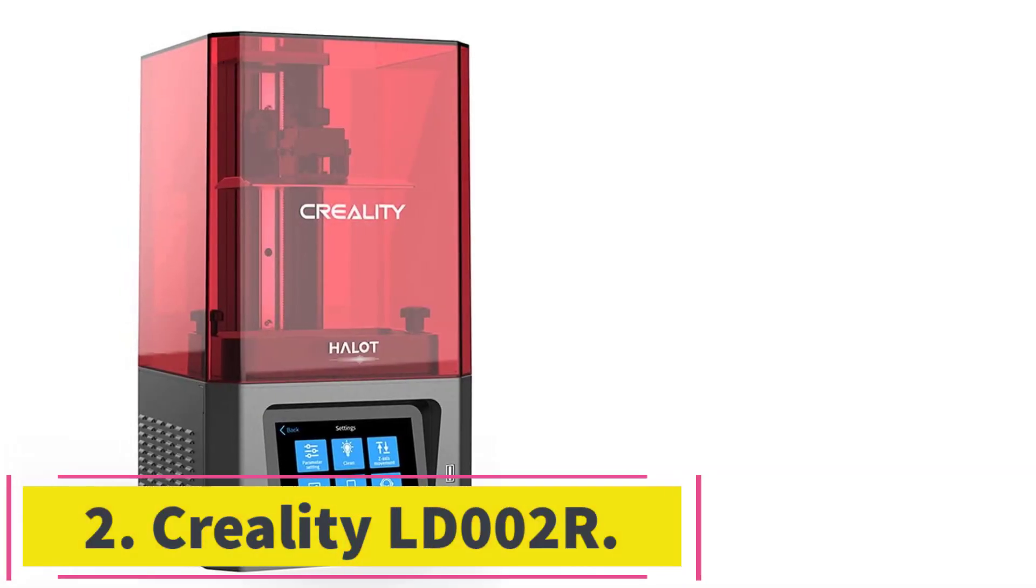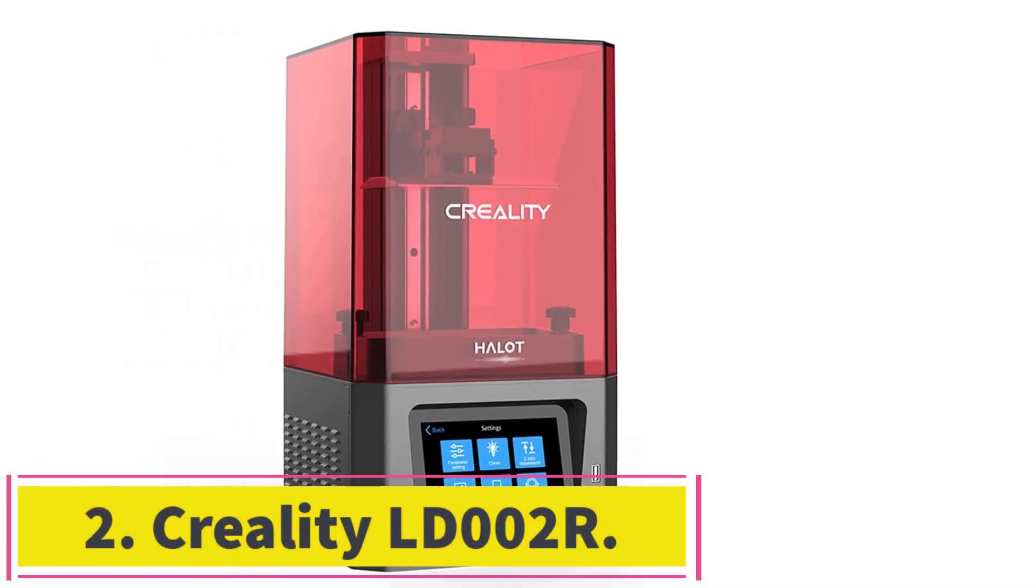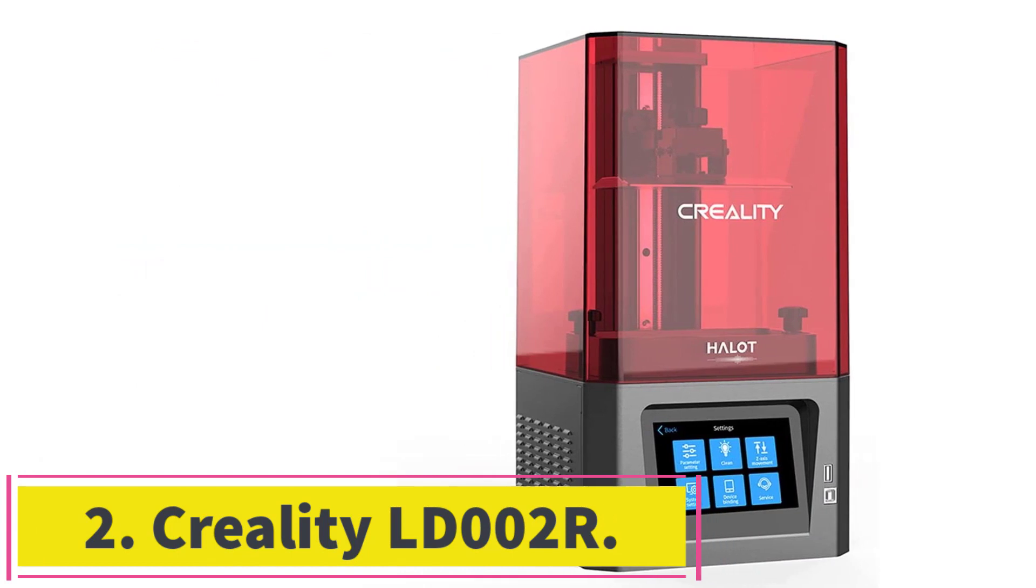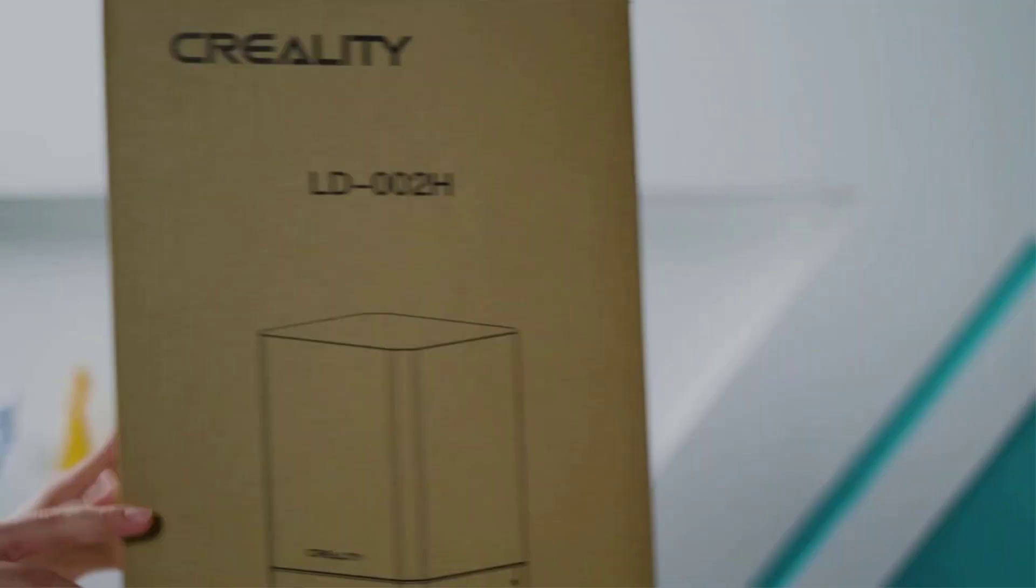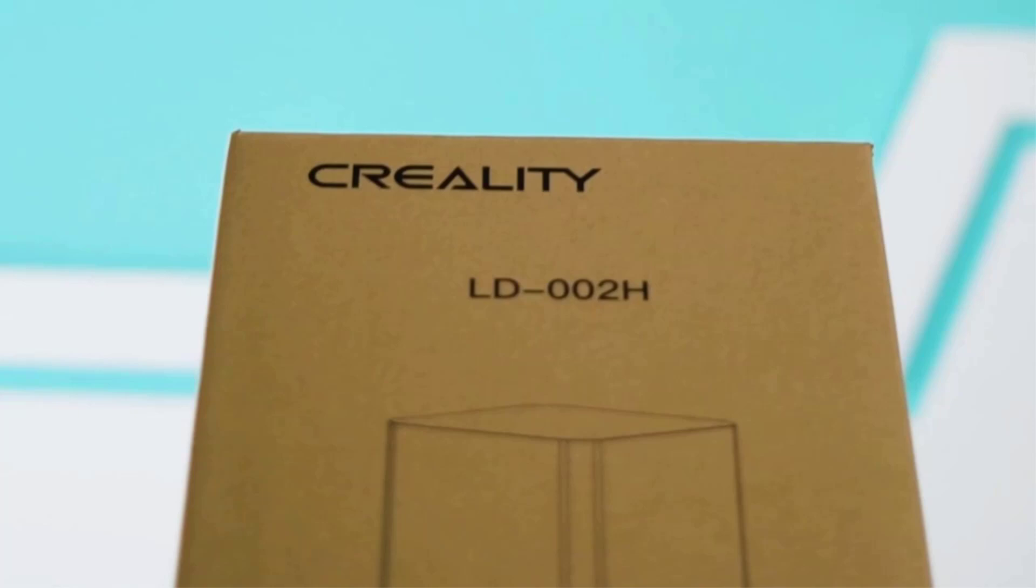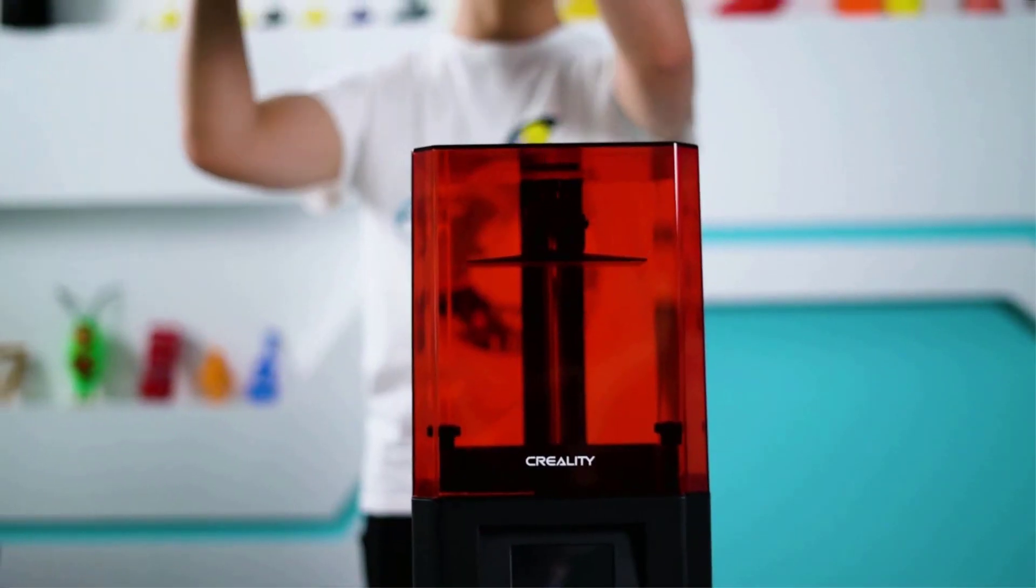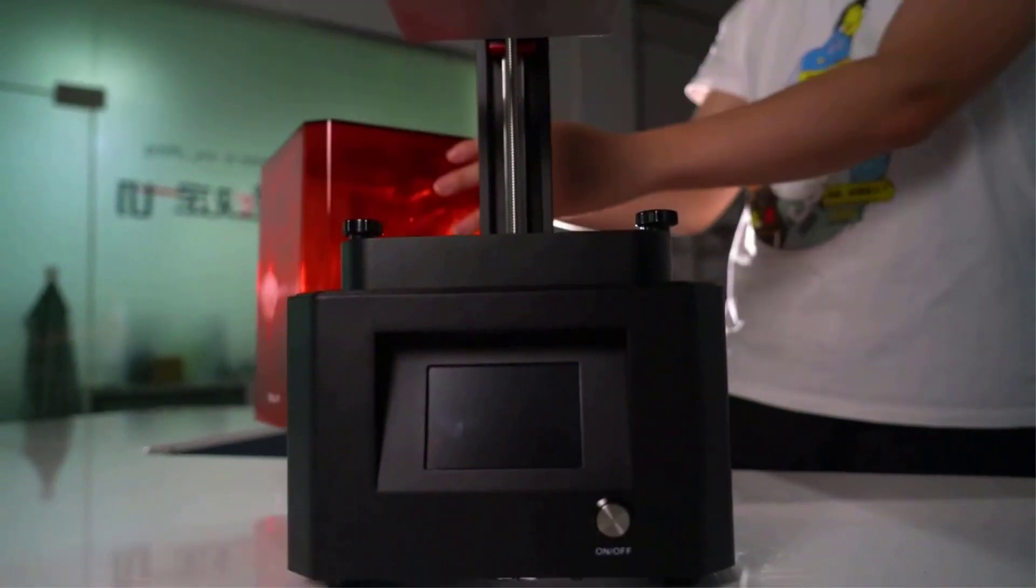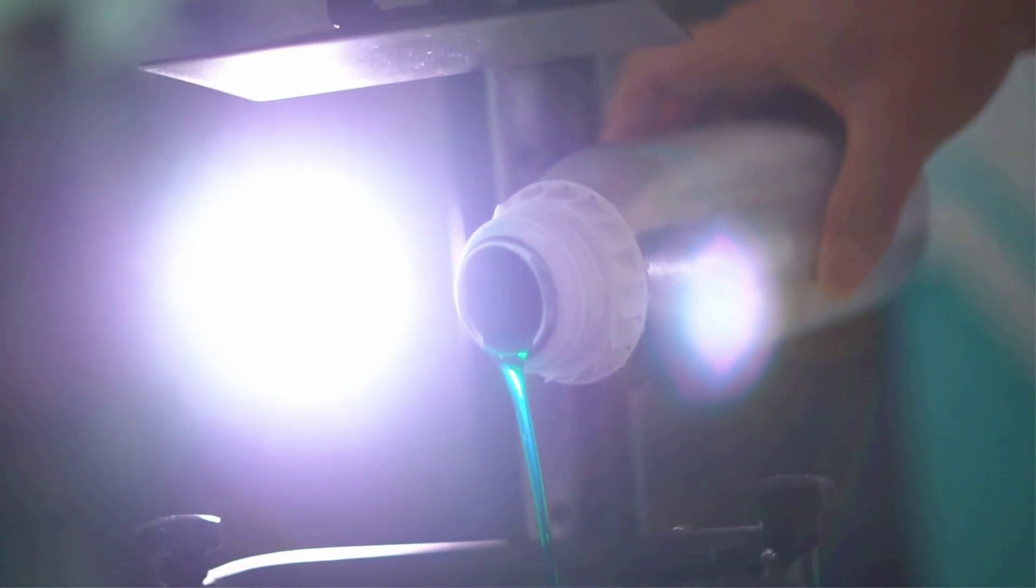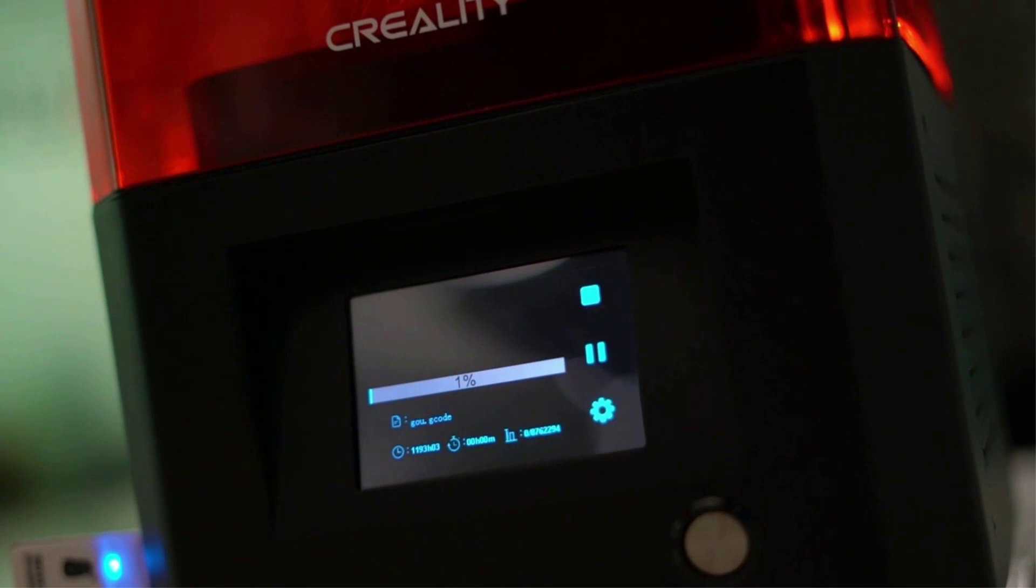Number 2, Creality LD002R. This printer features an air filtering system and the newest Chittabox slicing software. With it, you will need just 1 minute to slice 30Mb .STL model files. To compare, an open-source slicing software takes about 10 minutes to do the same. Due to amazing precision and high resolution, it is considered to be the best 3D printer for jewelry.